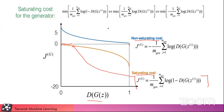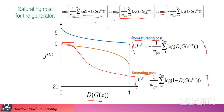We performed a mathematical transformation for the non-saturating cost. If we need to minimize the original term, it is the same as maximizing log of D(G(z)), where G(z) is an image generated by the generator which is then fed to the discriminator. Using the minus sign converts max to min. Looking at this graph, in the initial region we do have meaningful gradients — it is not zero like in the saturating case. That is why we use this non-saturating cost, and it is more effective for training GANs.